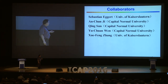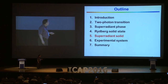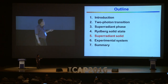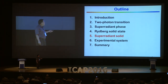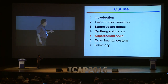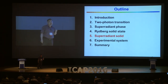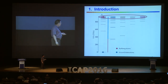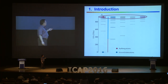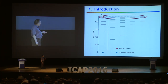Firstly, I want to thank Professor Substan, Agate, Ancunji, Qingsun, Yu Zhengwen, and Xue Feng Zhang. Here, firstly, I give the basic introduction on the Rydberg atoms. Then we discuss the two-photon transition. Then we discuss the new quantum phase — the super-radiated phase and Rydberg solid states. Then we combine into the new phase: the super-radiated solid. And then we want to find the real experiment system. Finally, we give the basic summary.